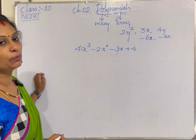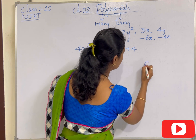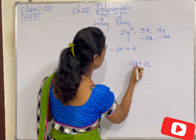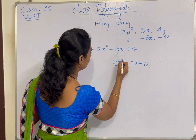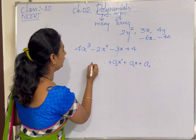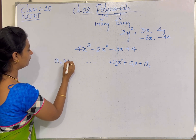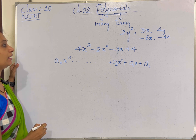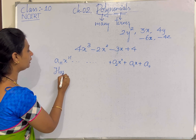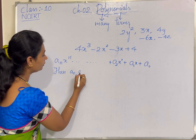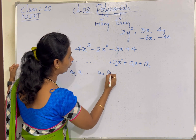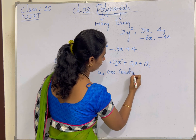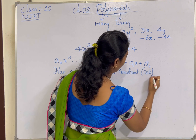The general form of a polynomial expression can be written as a₀ + a₁x + a₂x² + ... + aₙxⁿ. Here, a₀, a₁, ... aₙ are constants, or in other words they are the coefficients.